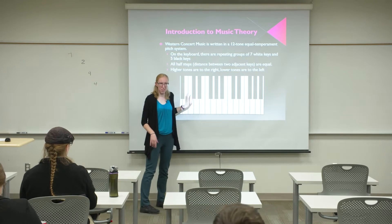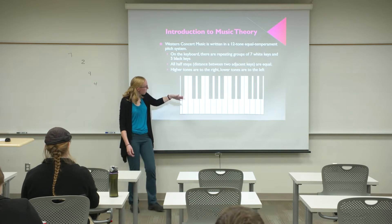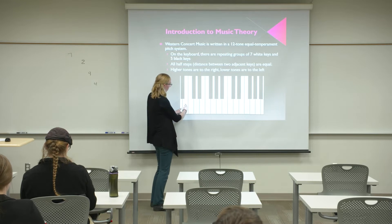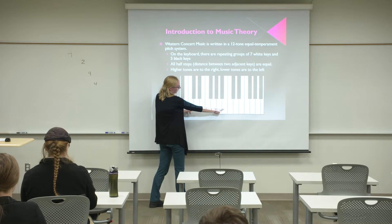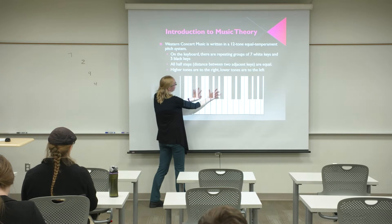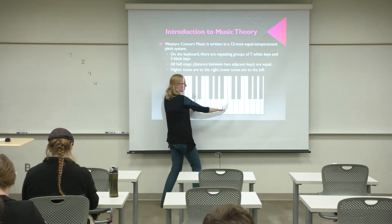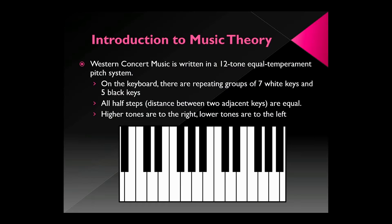On the keyboard there are 12 named notes, with repeating groups of 7 white keys: 1, 2, 3, 4, 5, 6, 7 — and then five black keys in between. This pattern just repeats over and over — math people, it's periodic. Higher tones are to the right and lower tones are to the left, just like a real number line.